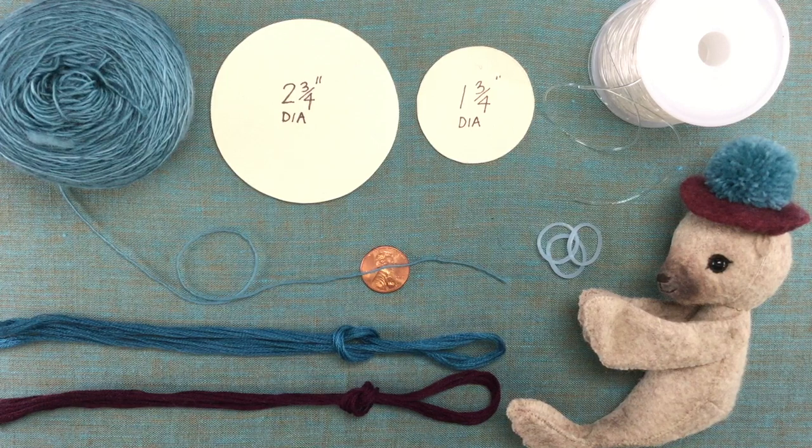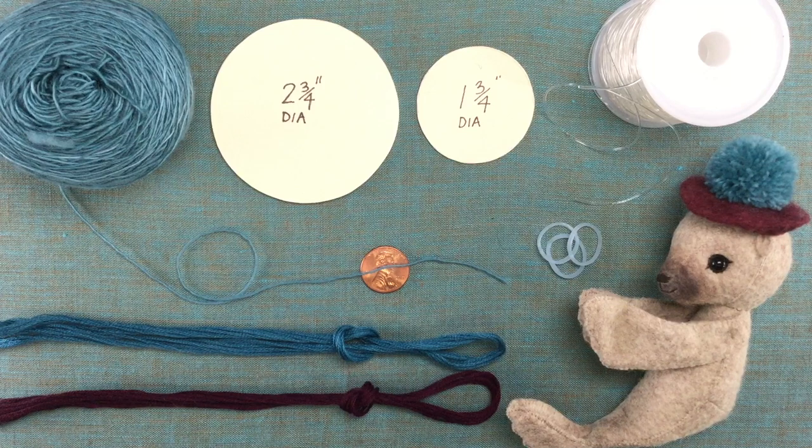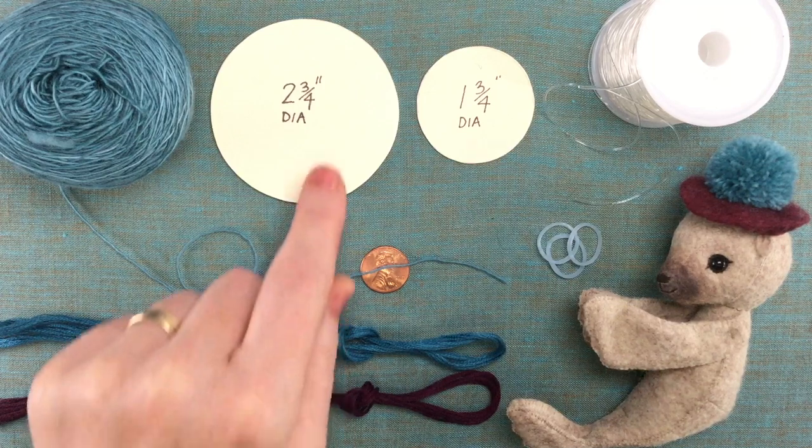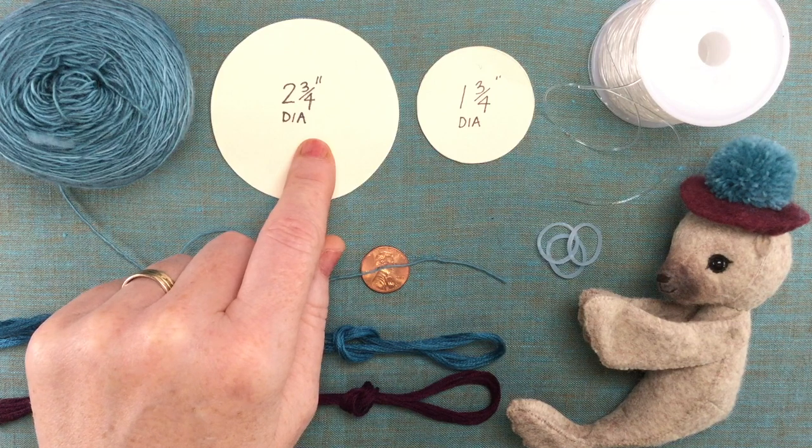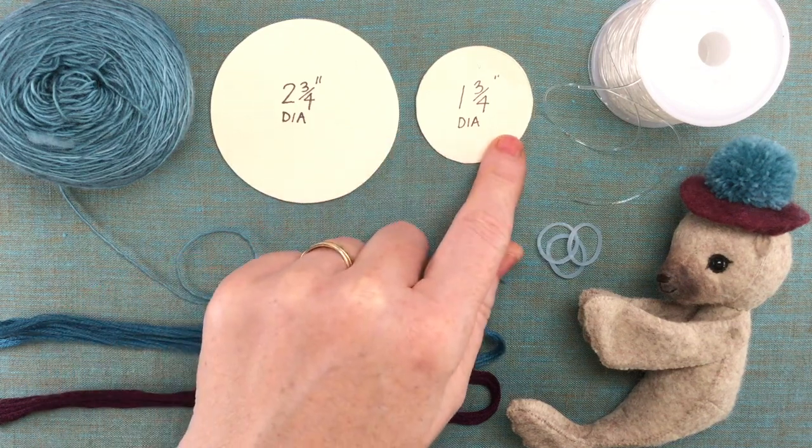The first thing you'll need is to cut out two circles: one that's three and three-quarters inches in diameter and one that's one and three-quarters inches in diameter.